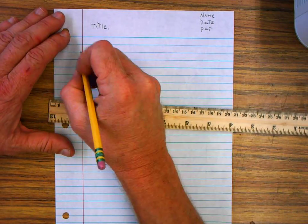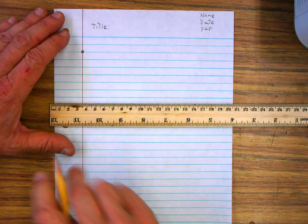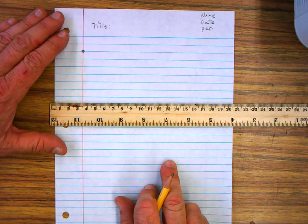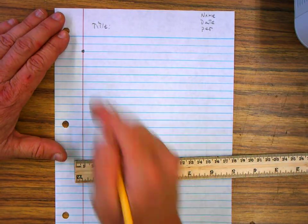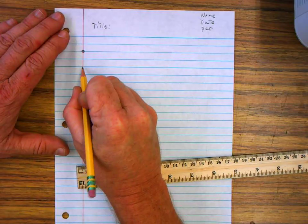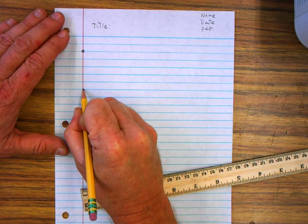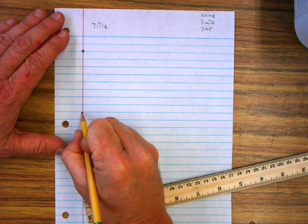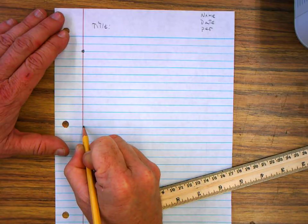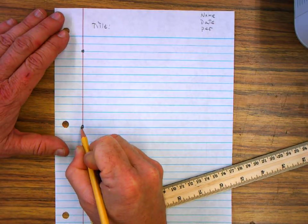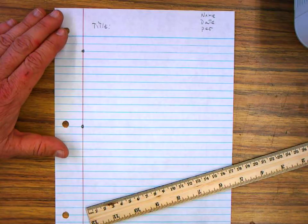But what you're going to do is you're going to put a little circle about the second line down, just like I've done here, and you're going to count down ten lines. One, two, three, four, five, six, seven, eight, nine, ten. On that tenth line, you're going to make another circle. These are just reference points.